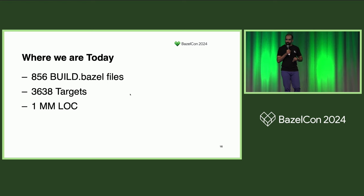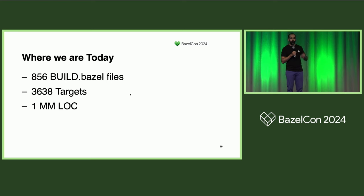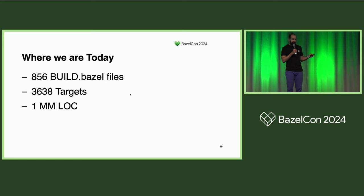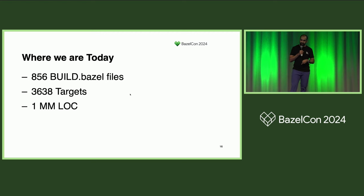Just to reinforce that we don't have a huge amount of vertical scale — just over 850 build files, just over 3,600 targets, and about a million lines of code. When I made this slide, I did not expect to see Airbnb's code base, for example, to compare against. But it's a pretty stark difference.